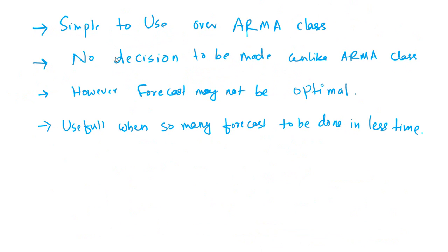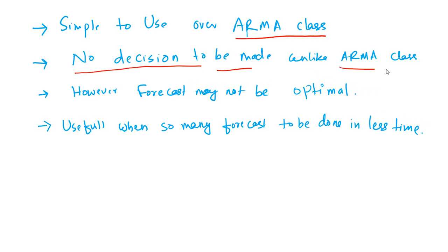The exponential time series model has some advantages and some disadvantages. It is very simple to use because we are not doing any estimation per se, and it is simpler than the ARMA class of models, which are a lot more complicated with many selection decisions and statistical tests to be performed. There is no complex decision-making unlike ARMA class of models, and you can always update the exponential smoothing model quickly, unlike ARMA models which take a lot of time.